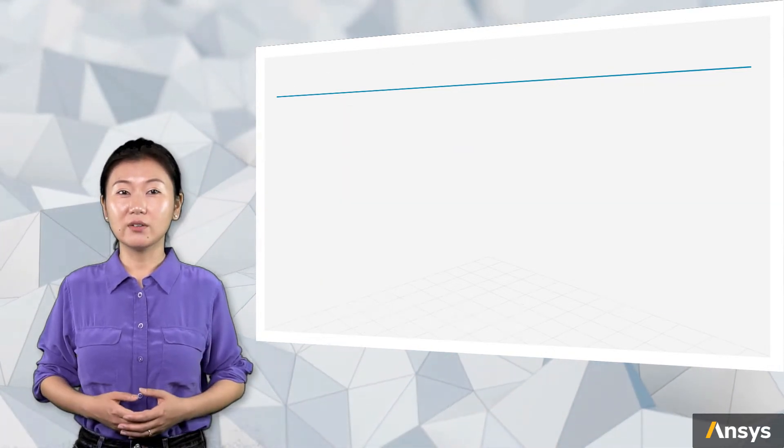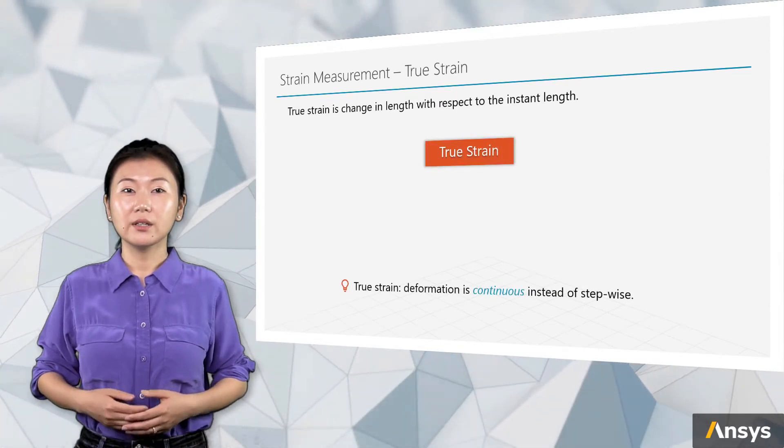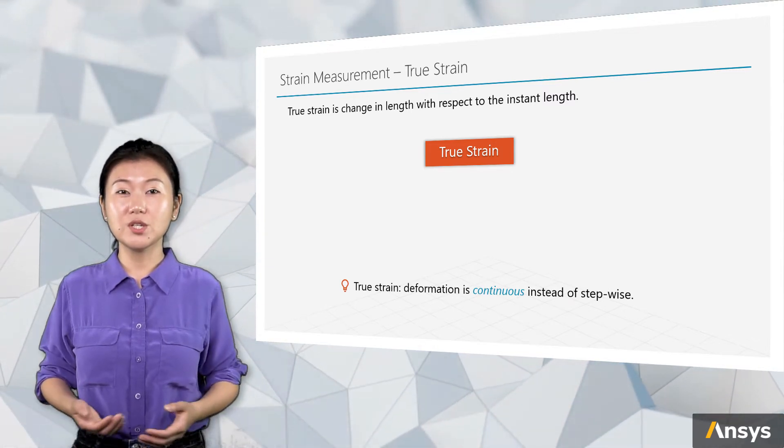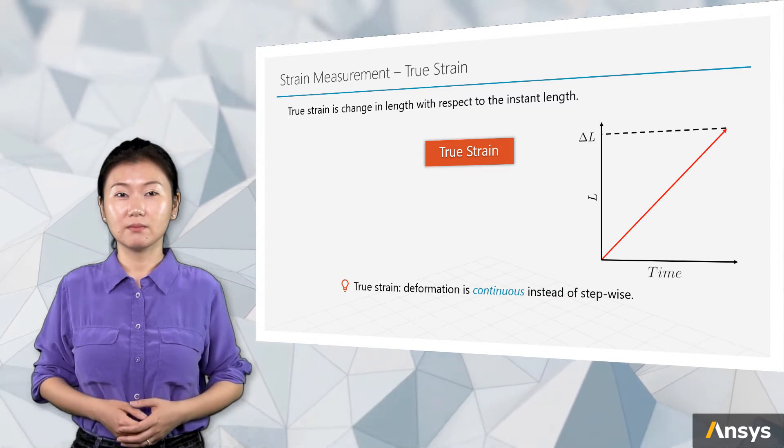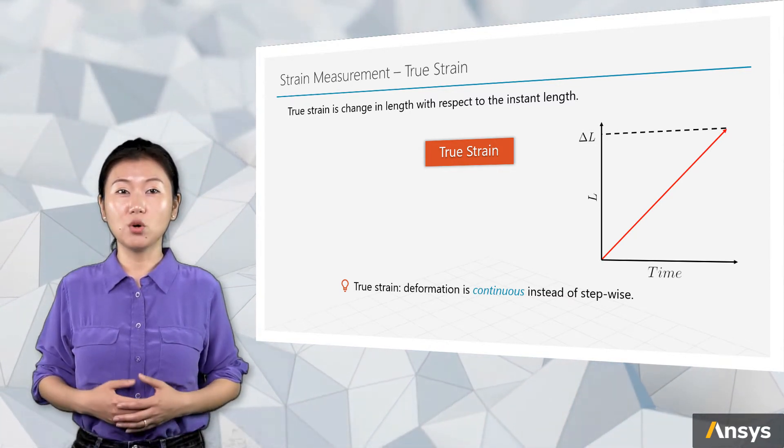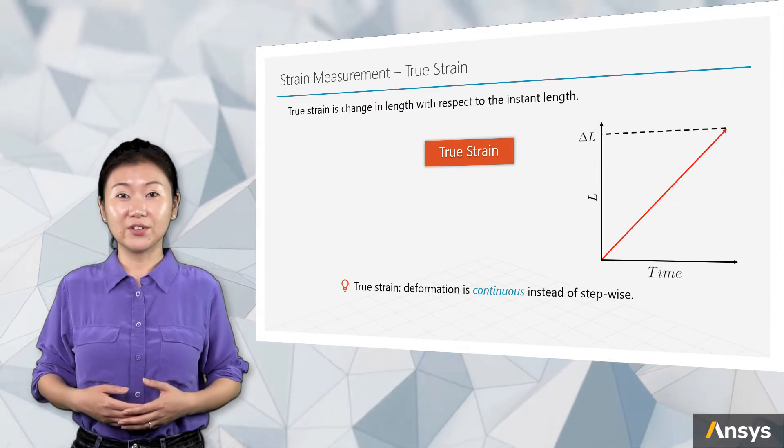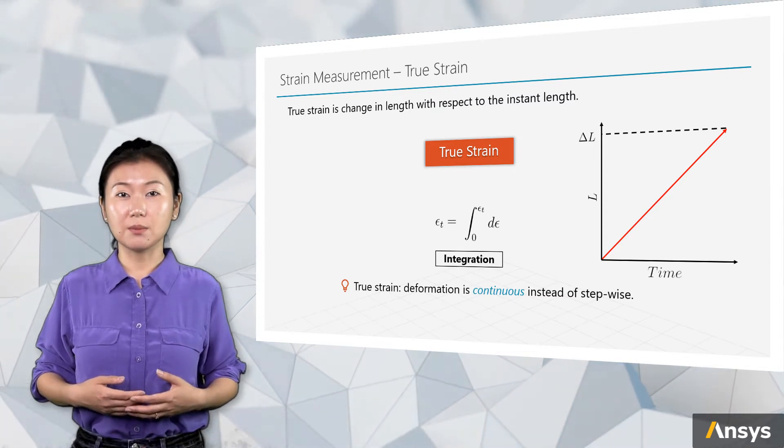Next, let's have a look at another widely used strain measurement, true strain. Here, instead of making any assumptions of the deformation process, we use the reality. The deformation is continuous. Just as implied by the name true strain, there's more truth here. Compared to engineering strain, the definition of true strain is a little more complicated, requiring the concept of integration.